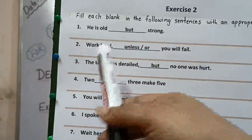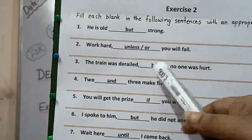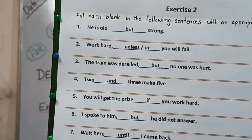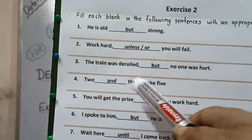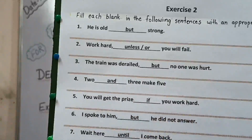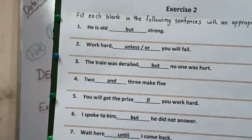Third: the train was derailed but no one got hurt. Here there is a contrast between the two sentences, that's why we have used 'but'. Fourth: two and three makes five. Here both similar sentences are used, and for the combination we are using 'and'.